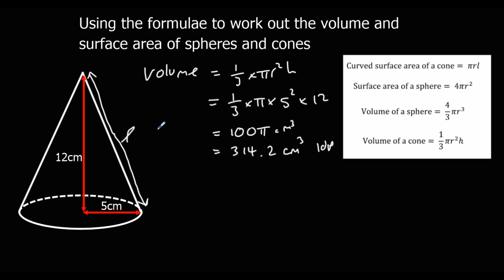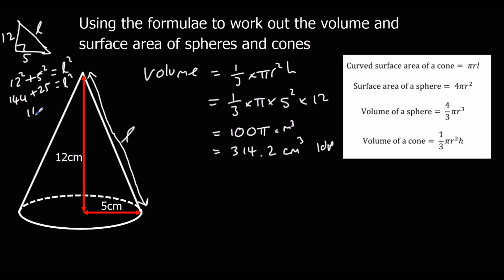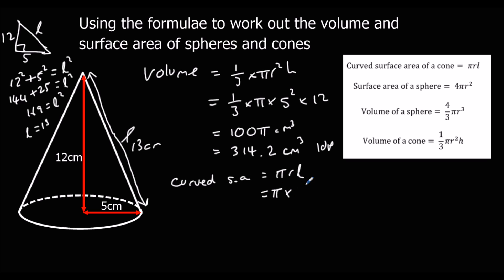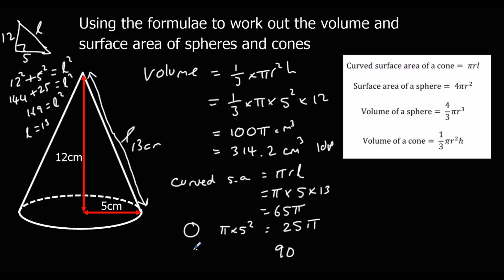To find the curved surface area we need to find l — another Pythagoras problem. We have 5, 12, and l: 12 squared plus 5 squared equals l squared, so 144 plus 25 equals 169, giving l equals 13 centimeters. The curved surface area is pi r l, which is pi times 5 times 13, giving 65 pi. Adding the circle area of 25 pi gives a total surface area of 90 pi, or 282.7 centimeters squared to 1dp.